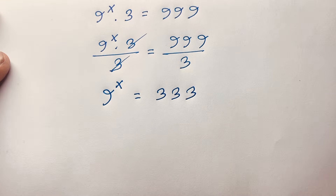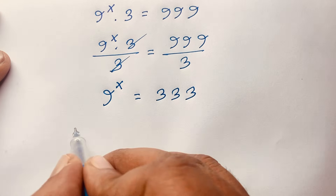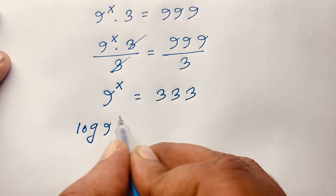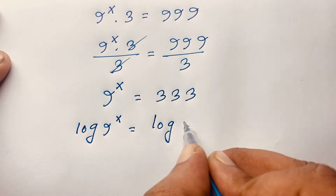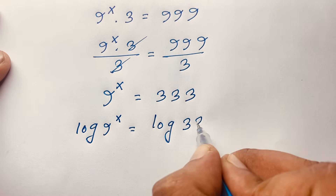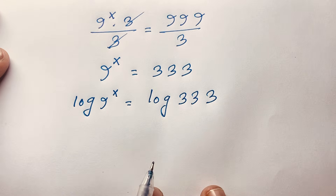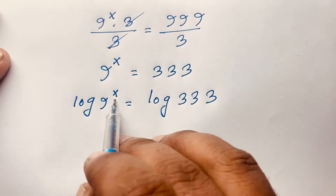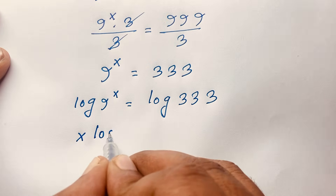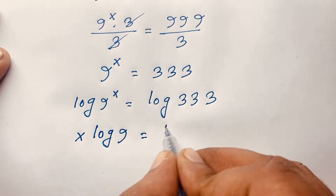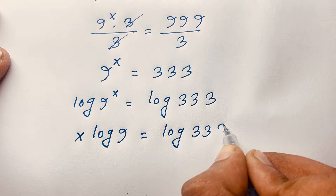But at this moment, x is equal to what? So I apply log to both sides. Log of 9 to the power x equals log of 333. According to logarithm rules, the exponent x moves to the front, so it becomes x times log 9 equals log 333.